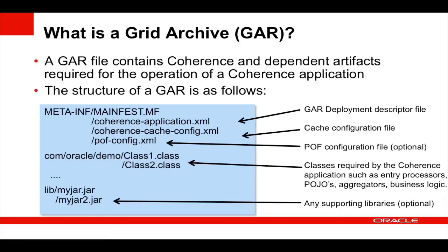The structure of a GAR file is as follows. We have the GAR deployment descriptor file, which I'll explain on the next slide. We have a cache configuration file, which defines the caches and services we want to provide. A POF configuration file for our Portable Object Format configuration. Any classes required by the Coherence application — these may be things like entry processors, plain old Java objects, aggregators, and any business logic. And any other external supporting libraries.